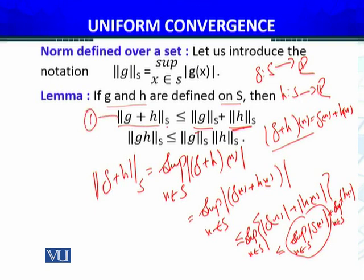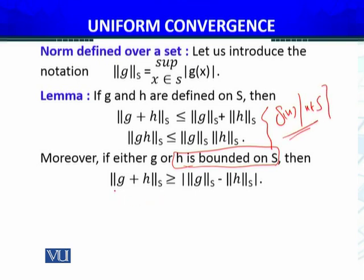The second inequality you can do yourself. Furthermore, if either g or h is bounded on S—bounded means the set {g(x): x∈S} is a bounded subset of real numbers—then we have ||g + h||_s ≥ | ||g||_s - ||h||_s |. These properties, similar to those from Analysis I, I will use very frequently to define uniform convergence.